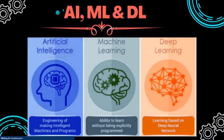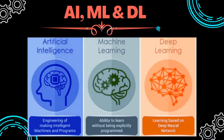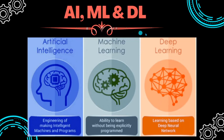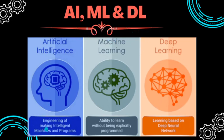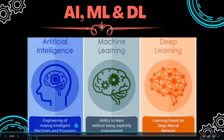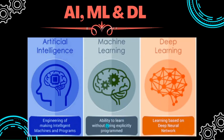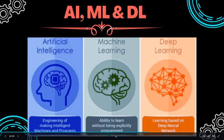Now let's look at the three different terms people often confuse: AI, ML, and DL. AI is the engineering of making intelligent machines and programs - a simple technique for making intelligent machines. ML, or machine learning, is the ability to learn without any explicitly programmed model. This means that unlike basic AI which runs on a fixed algorithm provided by a programmer, machine learning does not require explicit programming.